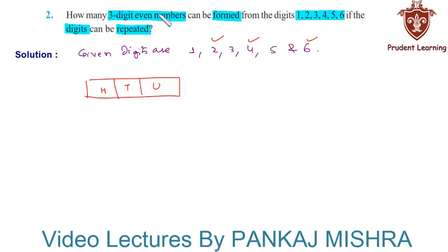Therefore, this units place can be occupied either by 2 or 4 or 6 in three different ways, since we know that a number is even only when its units place is even.